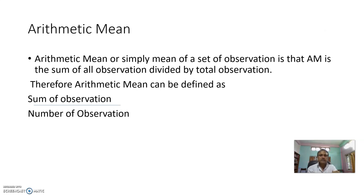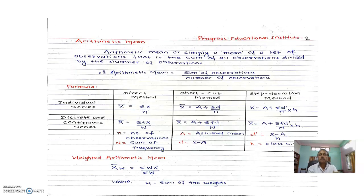Arithmetic mean, or simply mean of a set of observations, is the sum of all observations divided by total number of observations. This is summation x divided by n, where n is the number of observations. When the data is given in frequency form, then it will be summation fx divided by capital N, where capital N is the total frequency. This will be discussed; the other part will not be discussed here.